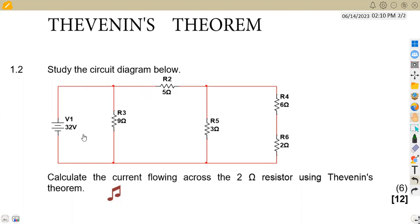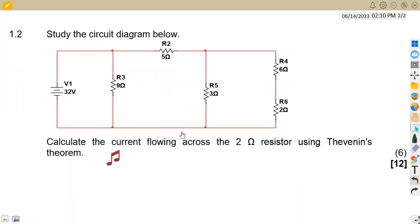We are given to study the second diagram below. Here we are asked to calculate the current flowing through the two ohm resistor using Thevenin's theorem. It is very important to note the method or theorem you are supposed to apply — do not just use another method.